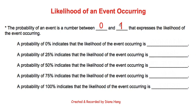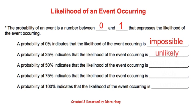So once you get a probability of 0%, it's associated with the likelihood of that specific event occurring as impossible. If the probability is 25%, then the likelihood of that event occurring would be what we call unlikely.